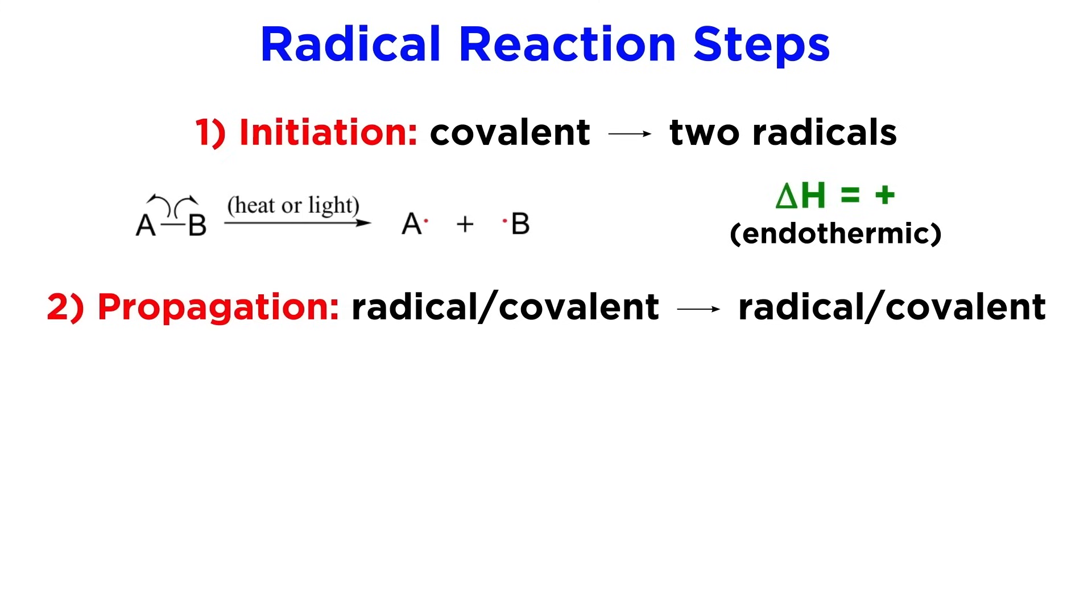Then once the radicals have been generated, there will be some number of propagation steps. This is where one radical propagates the existence of some other radical. This will be either exothermic or endothermic, depending on the bond enthalpies associated with the bonds being broken and formed.